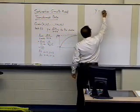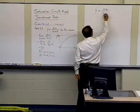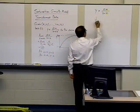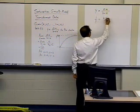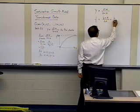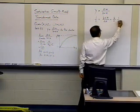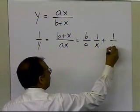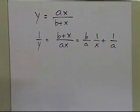So the way we're going to do it is we're going to say, if y is equal to ax divided by b plus x, then 1 divided by y is b plus x divided by ax, and that gives me b divided by a, 1 divided by x, plus 1 divided by a. So that's what it turns out to be equal to.